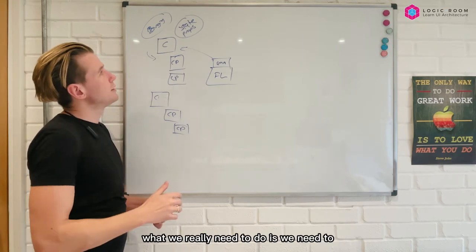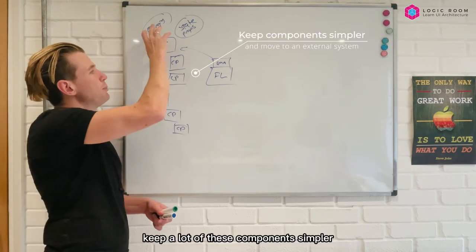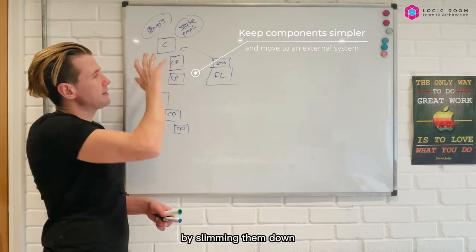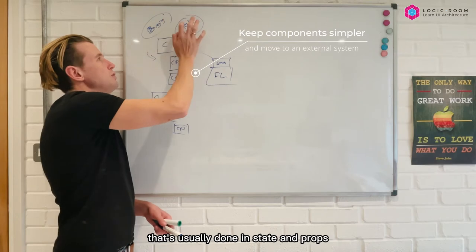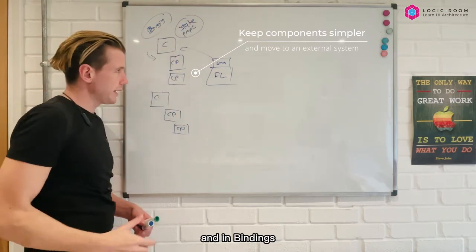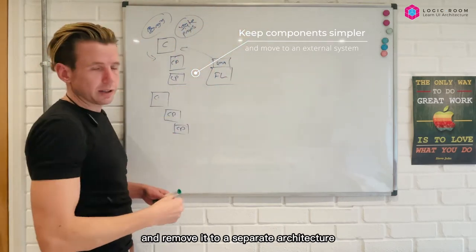What we really need to do is we need to keep a lot of these components simpler and we need to do that by slimming them down and removing a lot of this information that's usually done in state and props and in bindings and remove it to a separate architecture.